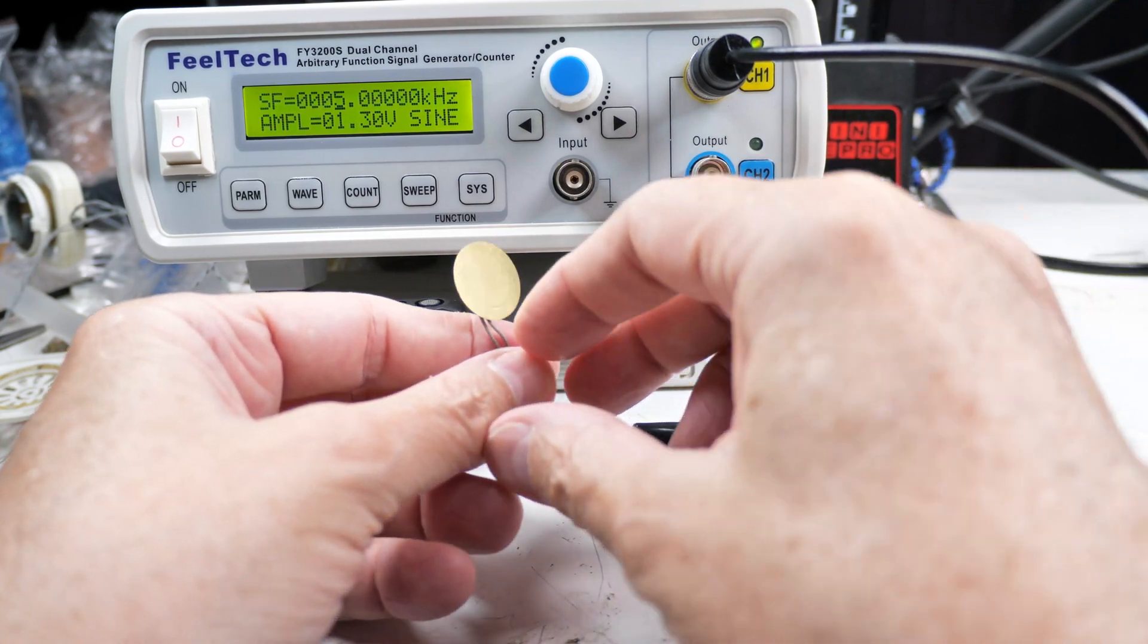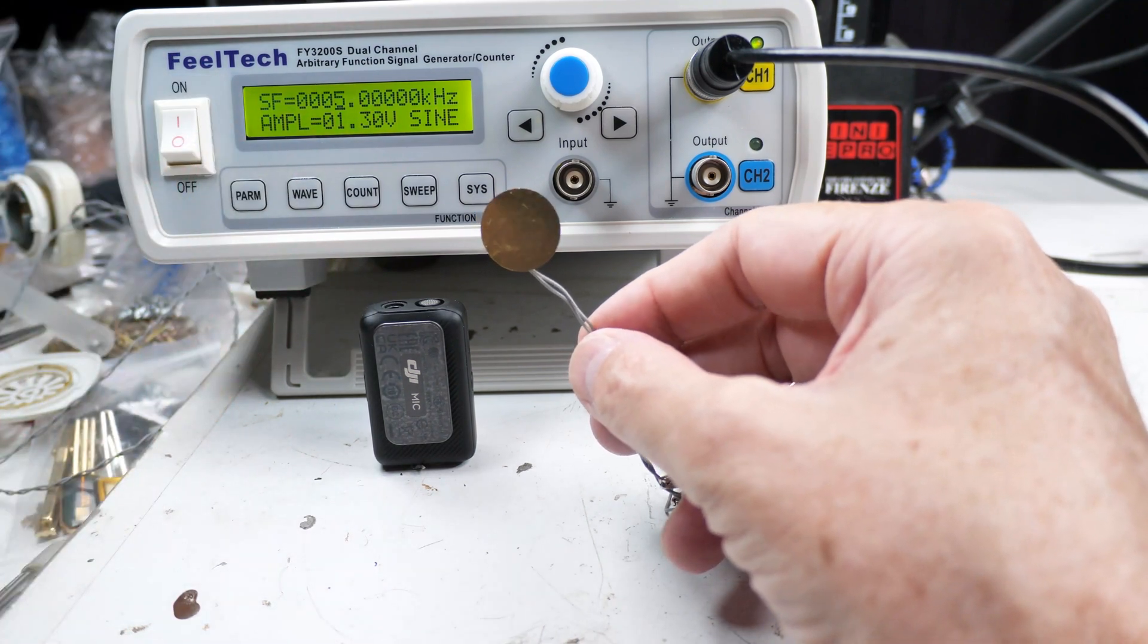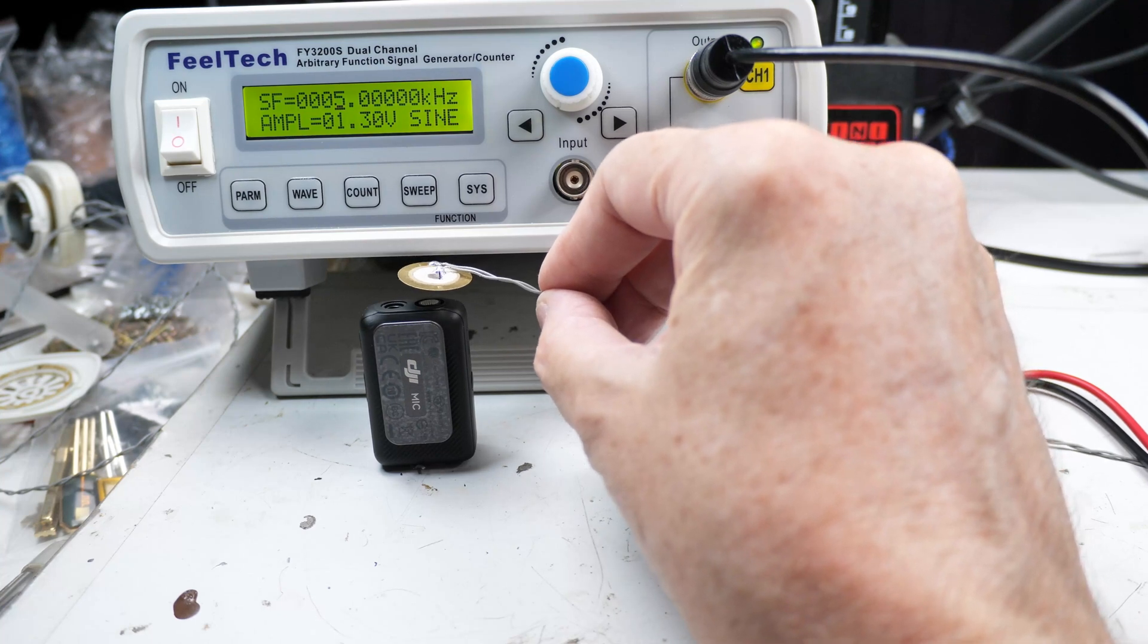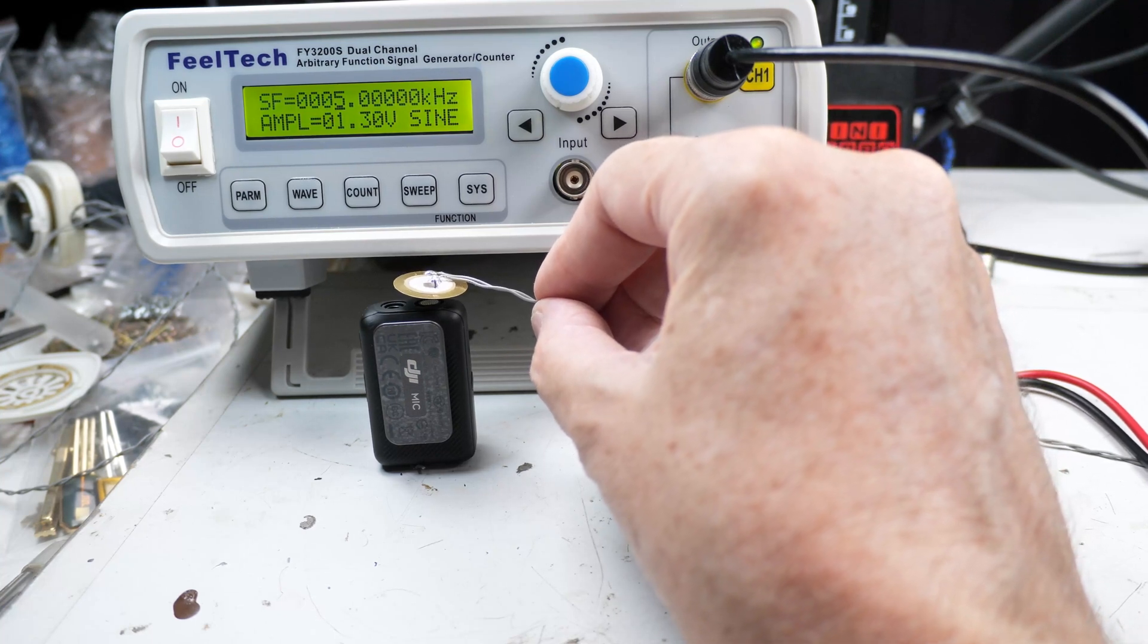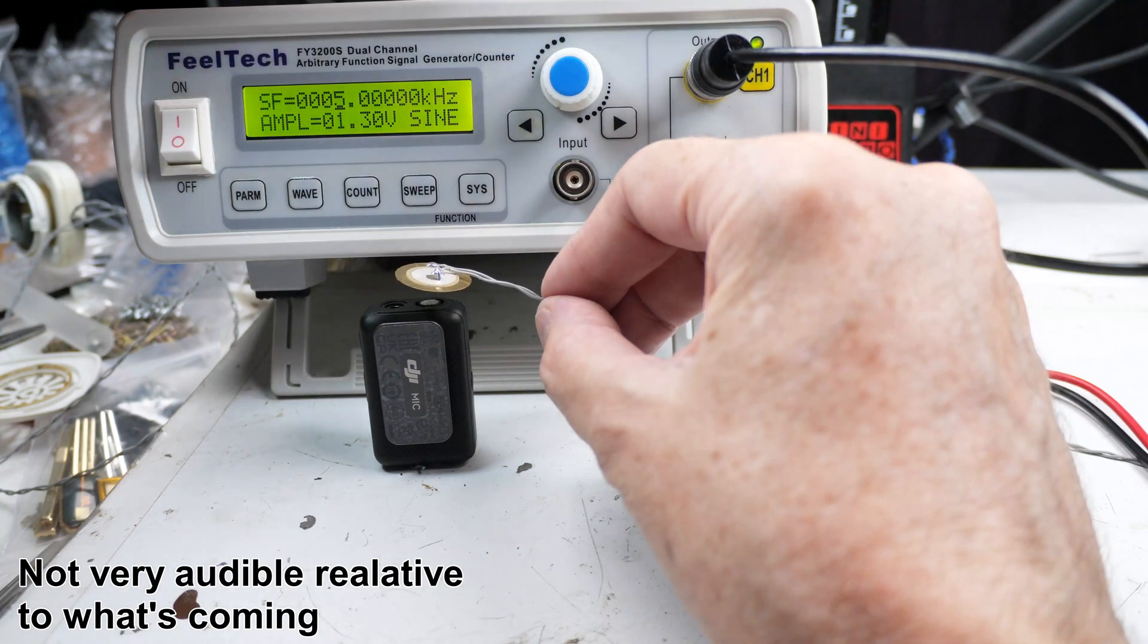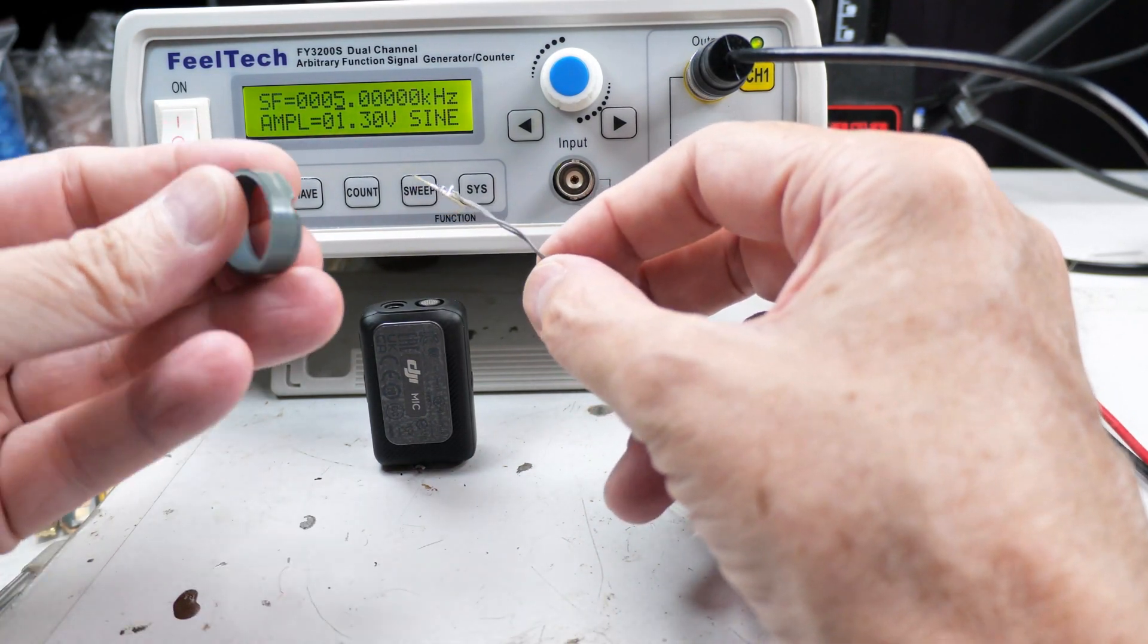So here we have our sound generator hooked up. This is one of my microphones back here. And we'll do this. And you might notice that it's not very audible. Let's see. Yeah, we have it on five kilohertz lower end of human hearing.